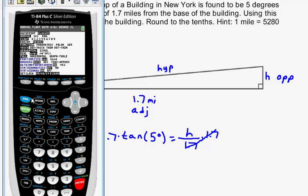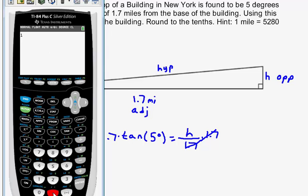Getting back to the home screen by hitting second, and then quit, I'm going to type in 1.7 times the tangent. There's the button for tangent of 5 degrees. No need to put the degree symbol in as the calculator is in degree mode.